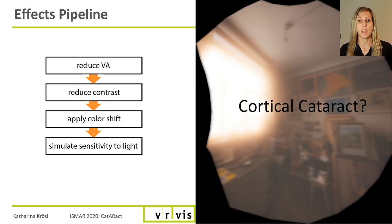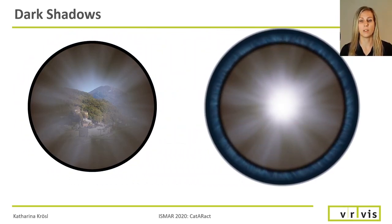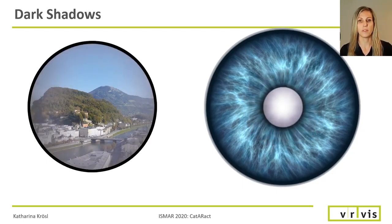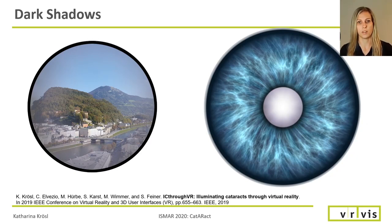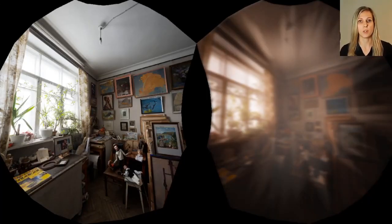Cortical cataracts additionally create dark shadows in the periphery of your vision. To simulate these shadows, we add one stage to our effects pipeline. We essentially use a shadow texture to darken the periphery and use eye tracking to move this effect with the user's gaze. Since shadows become more or less prominent depending on the pupil size, we scale our texture according to the brightness around the gaze point. We improve the simulation from one of our earlier works and use a Gaussian function centered at the gaze point to calculate a Gaussian-weighted image brightness, giving us a simulation of cortical cataracts.